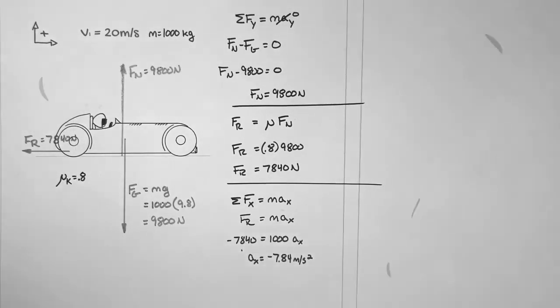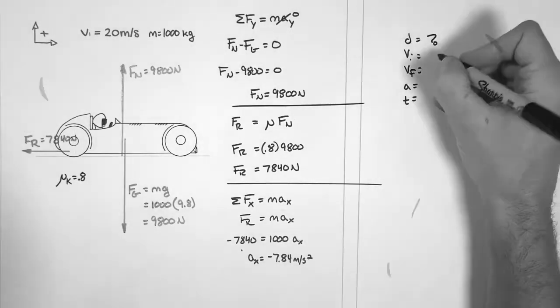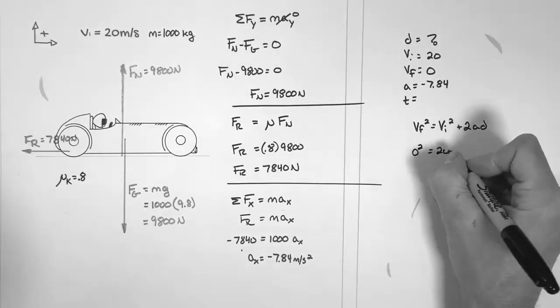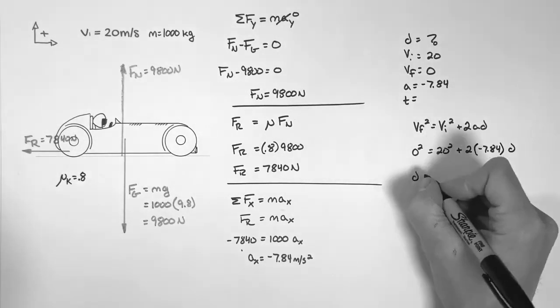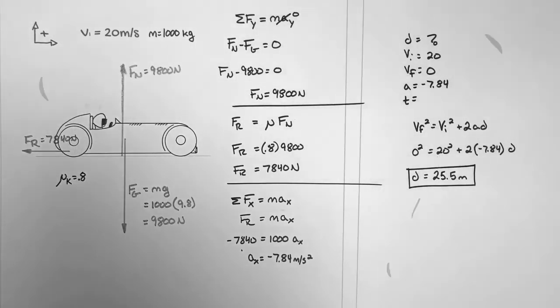Having found the horizontal acceleration of the car, we'll now plug that acceleration into the kinematic equations to solve for the total stopping distance of the vehicle. And we find the total stopping distance of the car is 25.5 meters. This is a good stopping distance, but is it possible to do better?